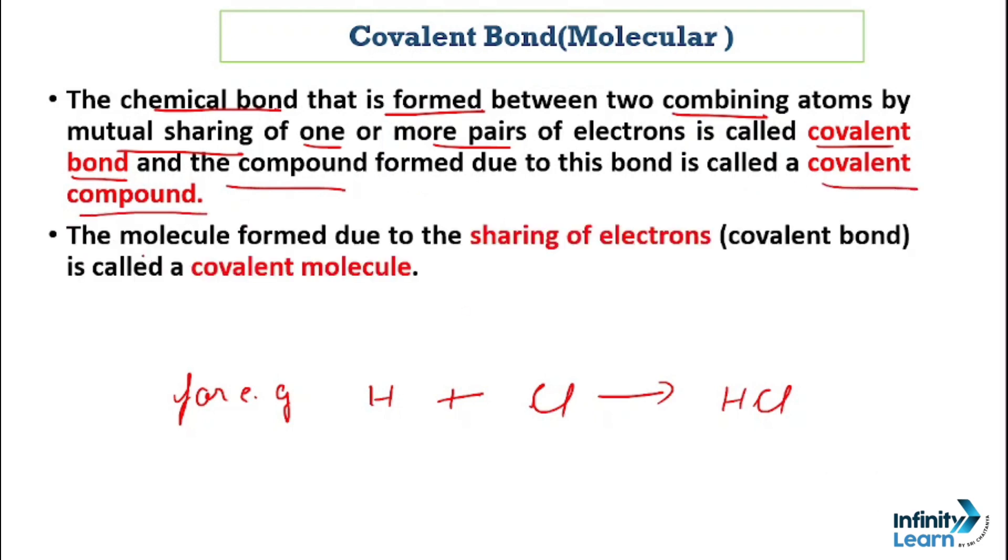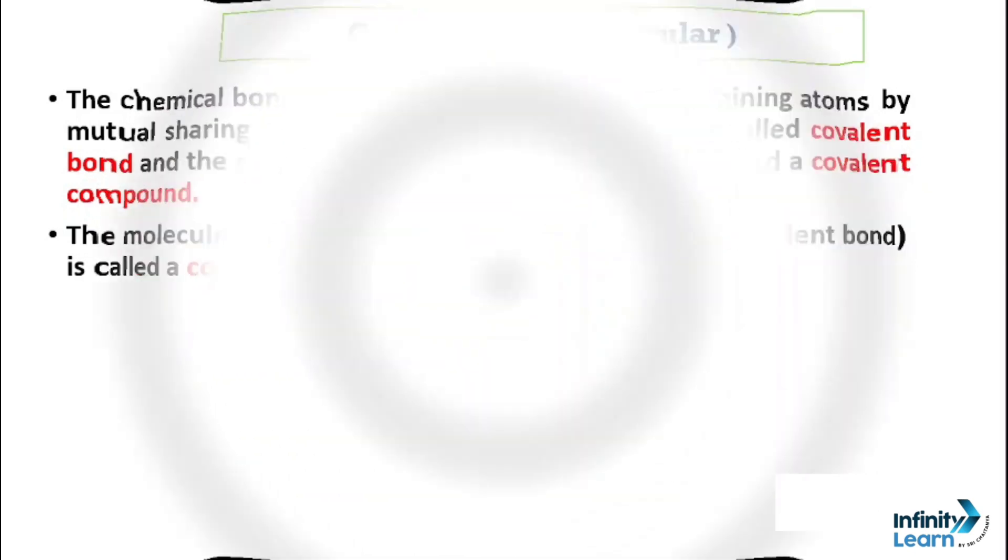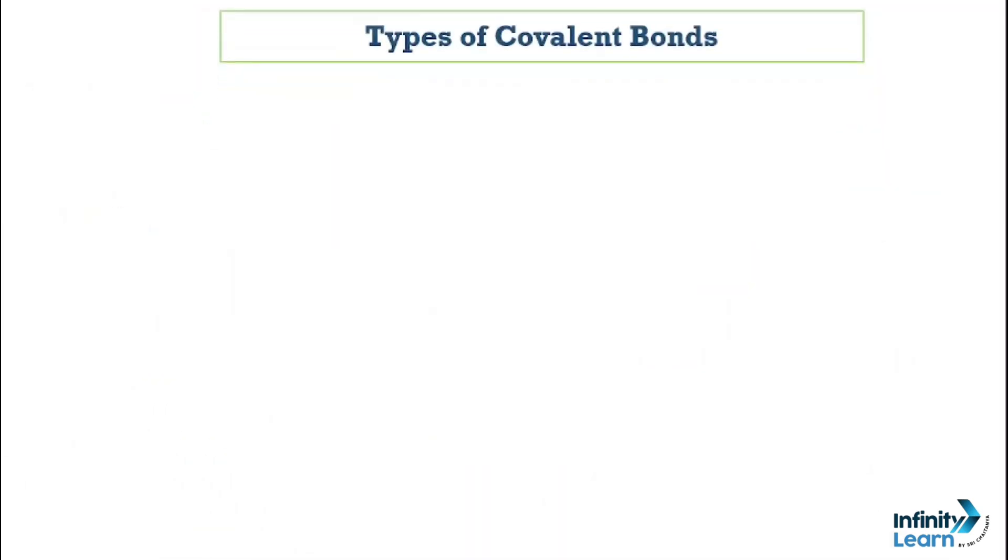Any molecule formed by the sharing of electrons is called a covalent molecule. We will learn some more examples in detail later in this video. But before that, let's talk about the types of covalent bonds. Covalent bonds are of three types: first is single covalent bond, second is double covalent bond, and third is triple covalent bond.